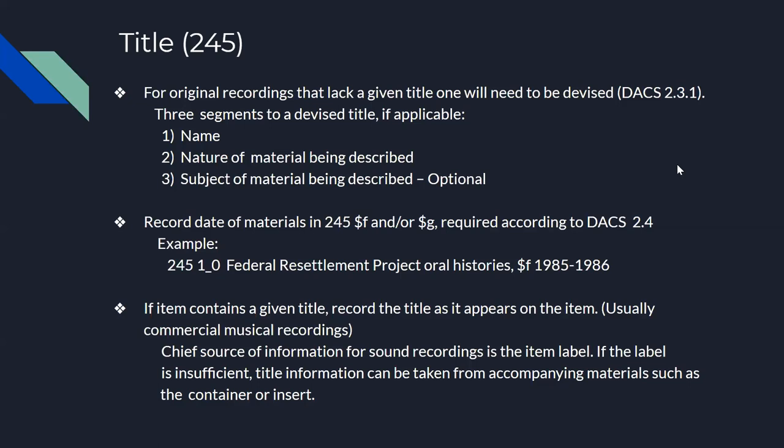According to DACS, there are three segments to a devised title that can be used together or separately: the name of the person or organization responsible for creation of the materials, the nature of the materials being described such as oral histories or lectures, and the subject of the material if it adds value to the record. All segments are not required; use those that fit your materials and local procedures.